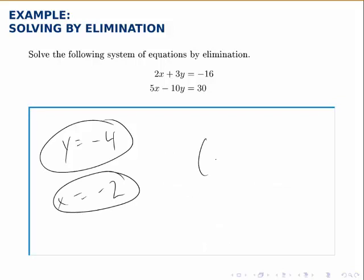Therefore, the point where these two lines cross is when x is negative 2 and y is negative 4.